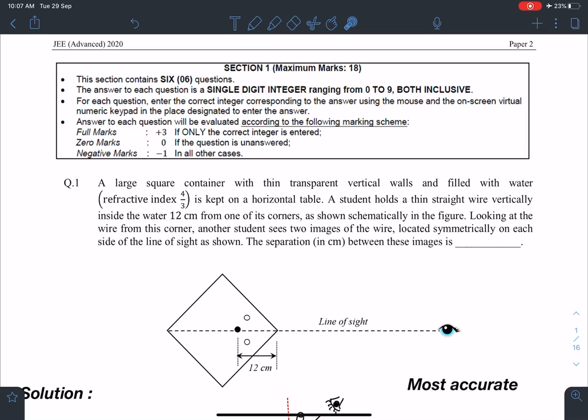A student holds a thin straight wire vertically inside the water 12 cm from one of its corners as shown. Looking at the wire from its corner, another student sees two images of the wire located symmetrically on each side of the line of sight as shown. The separation in cm between these two images is?